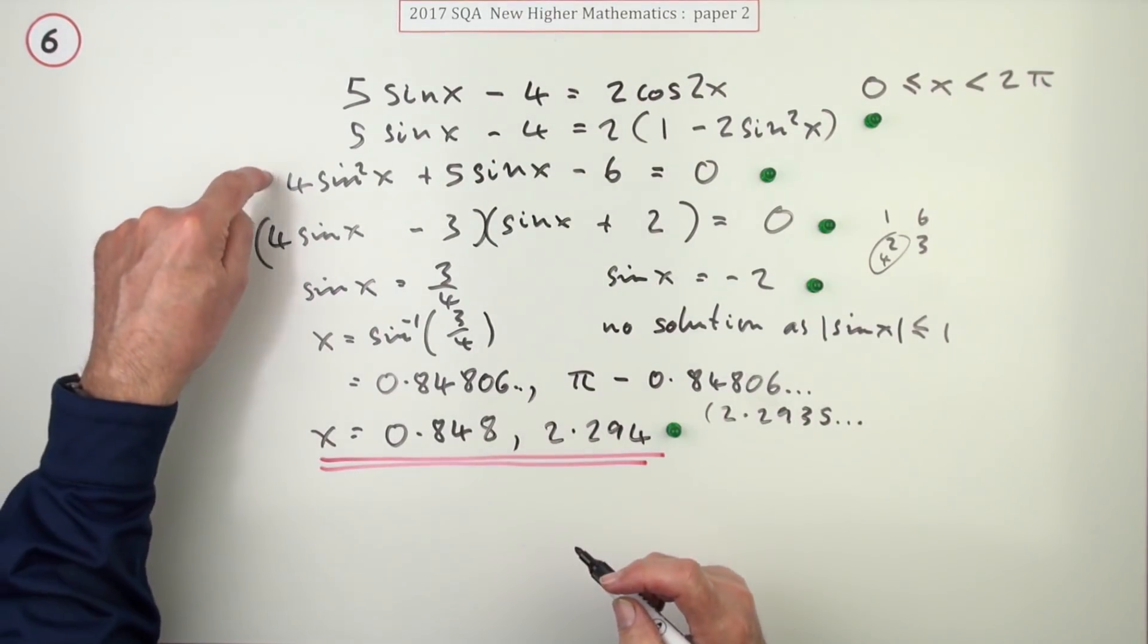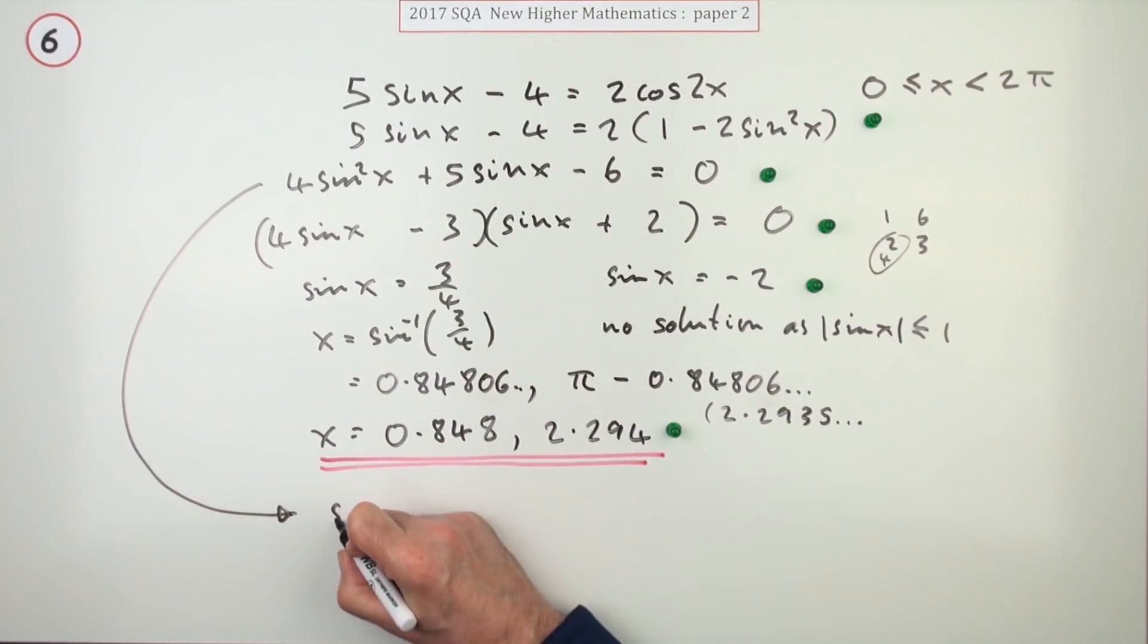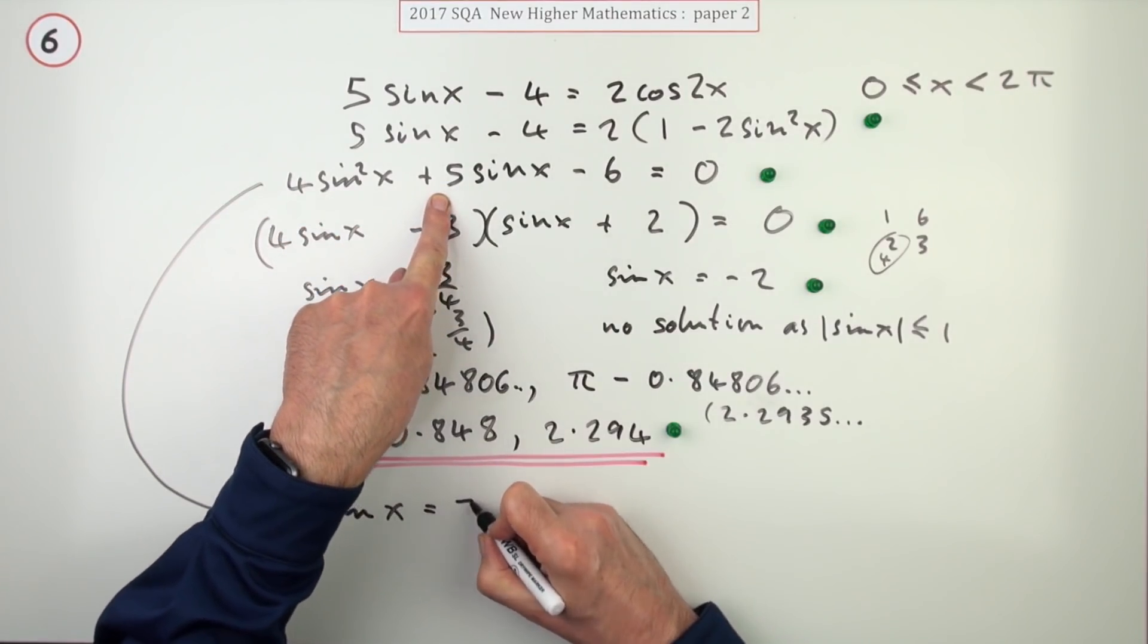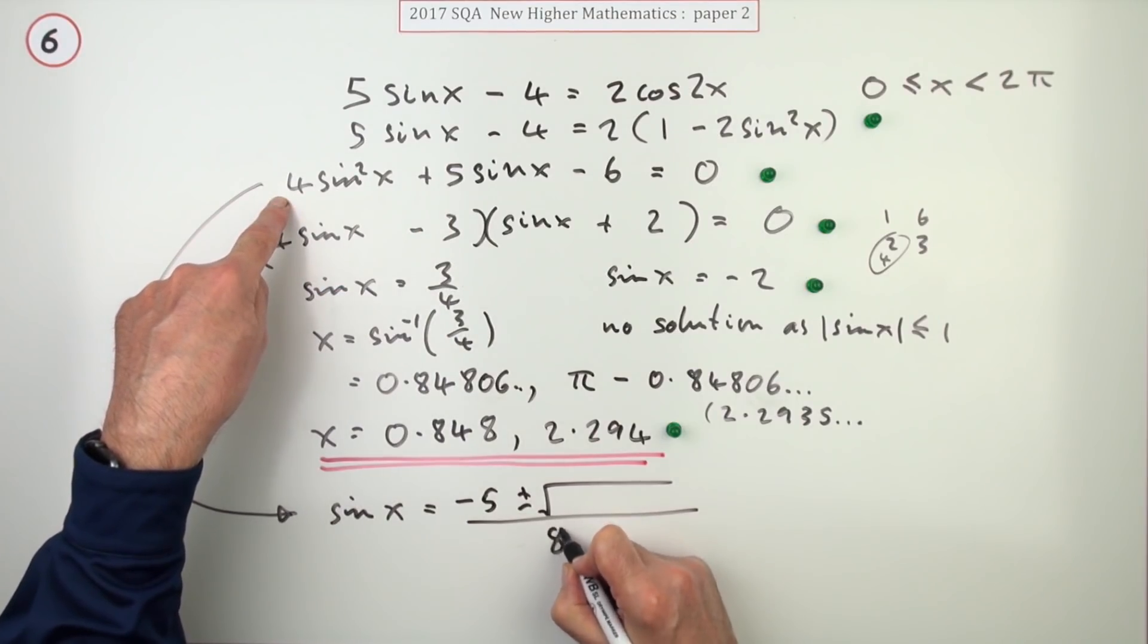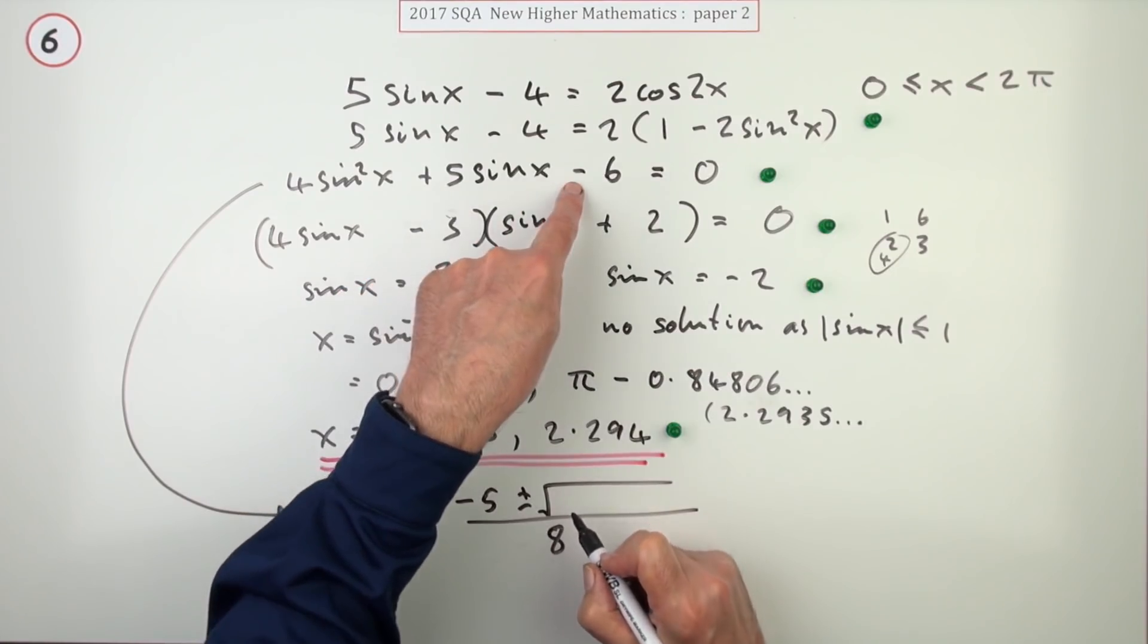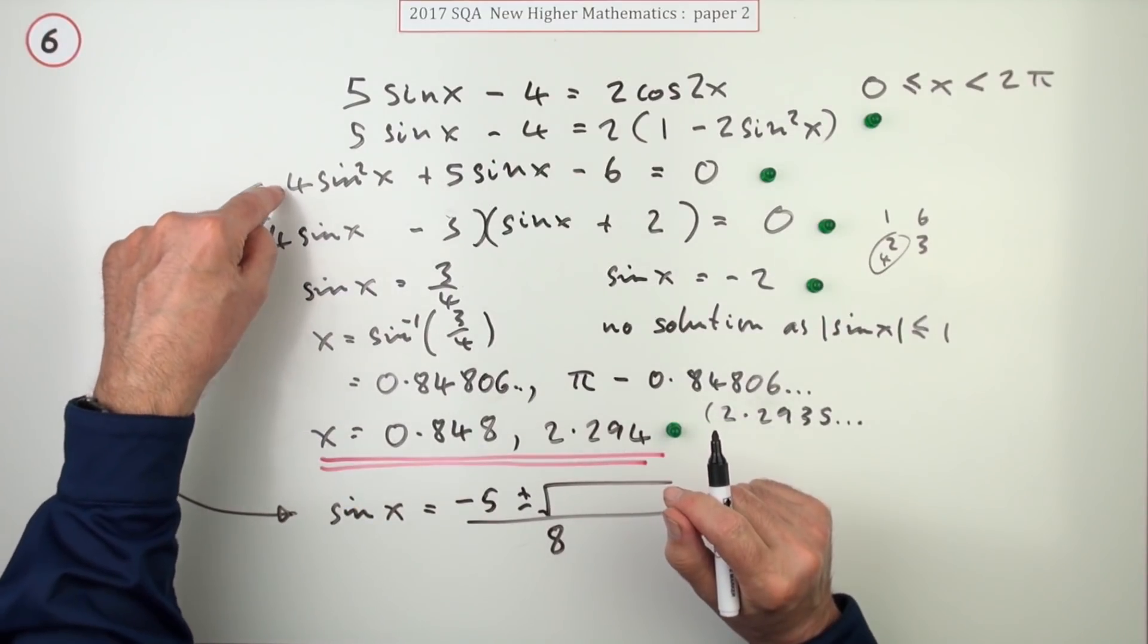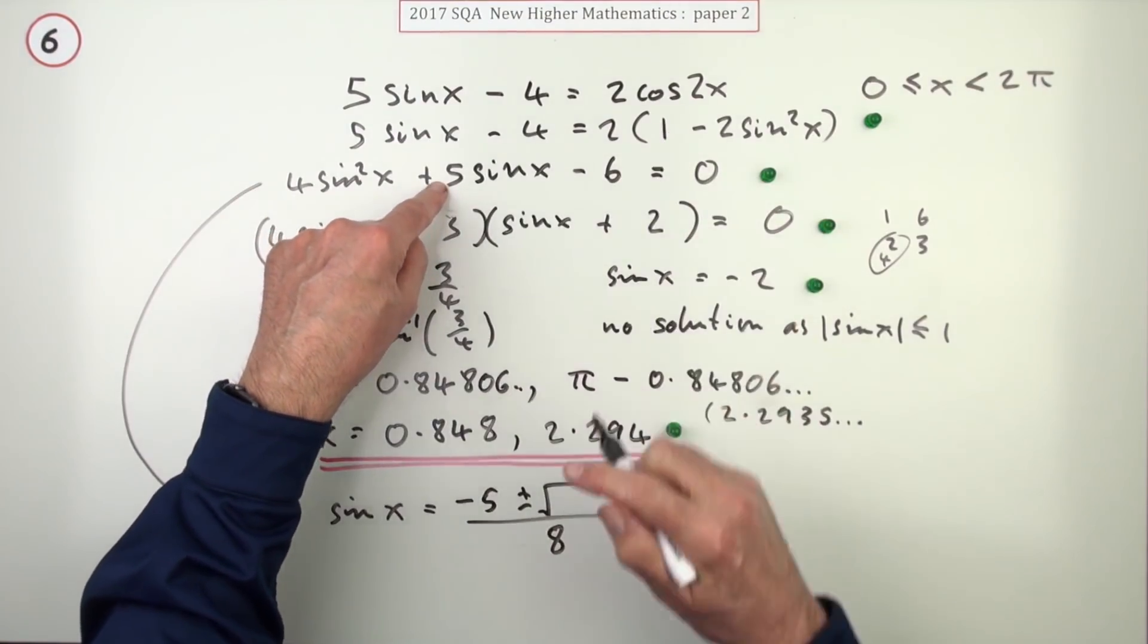Now if you were stumped with that factorization, you're perfectly at liberty to use the quadratic formula. Remember the variable is sine x, not x. So that'd be sine x equals negative b, so that'll be negative five, plus or minus the square root of, over two times four, two a, eight, of b squared, twenty-five, minus that'll be plus, so it's four because you just use your calculator for this, four times four times six, it better be four times twenty-four, ninety-six, ninety-six plus twenty-five, one hundred and twenty-one.